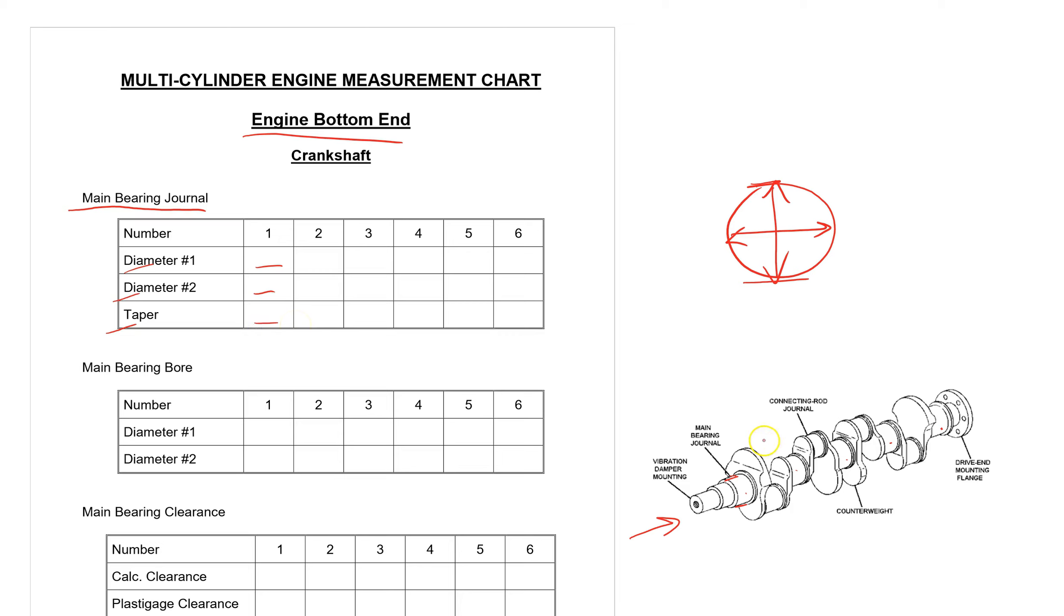And the way we check taper is we put the micrometer around one side and then we slide it in that direction. We're going to start here and move it in that direction. If it gets loose or if it gets tight and you can't slide it, then it has tapered. In other words, the crankshaft journal isn't parallel like that, it's tapered.